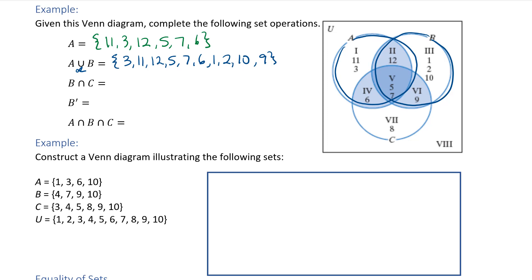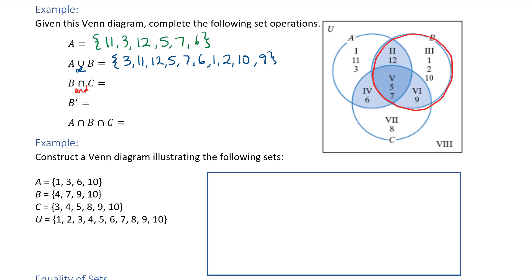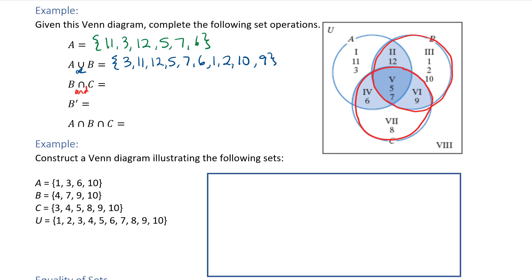The next one is B intersect C. Intersect means 'and,' so an element has to be in circle B and in circle C at the same time. The only section that is in both B and C simultaneously is the overlap region, which covers regions 5 and 6. So the answer is all the elements in those regions: 5, 7, and 9.